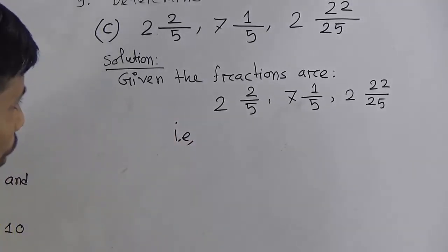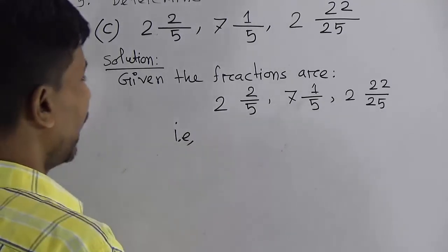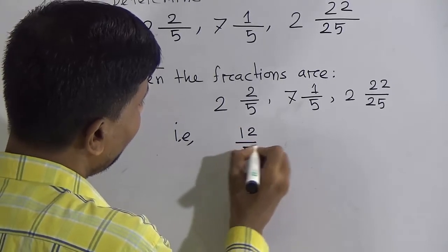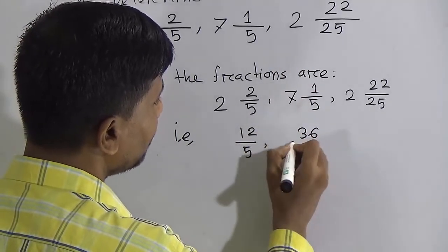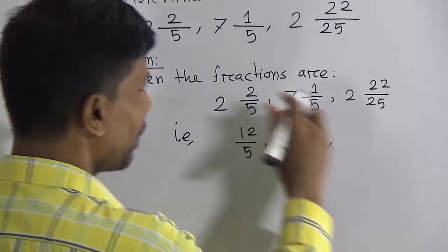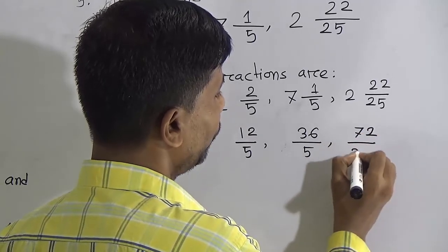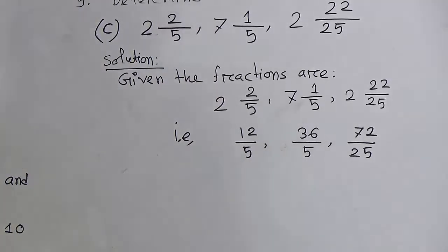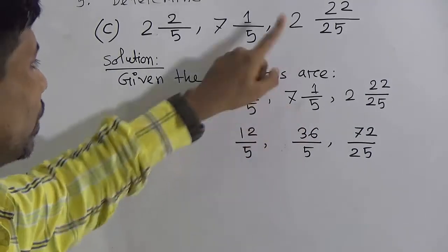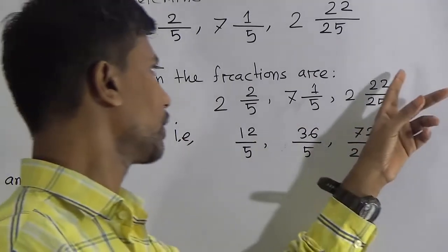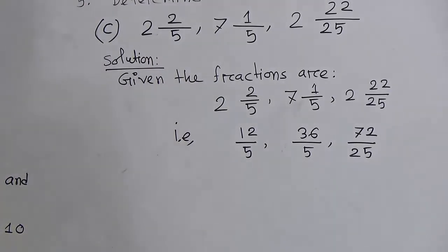First task: convert the mixed fractions to improper fractions. 2 and 2/5 → 5 × 2 + 2 = 12, so 12/5. Then 7 and 1/5 → 5 × 7 + 1 = 36, so 36/5. Then 2 and 22/25 → 25 × 2 + 22 = 72, so 72/25. So our fractions are 12/5, 36/5, and 72/25.